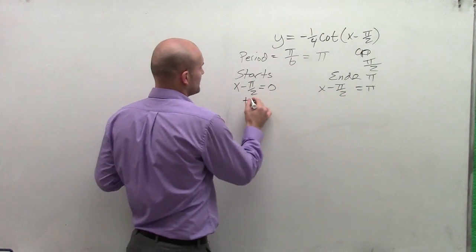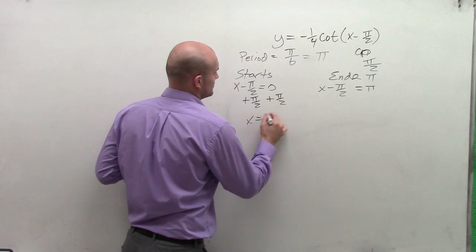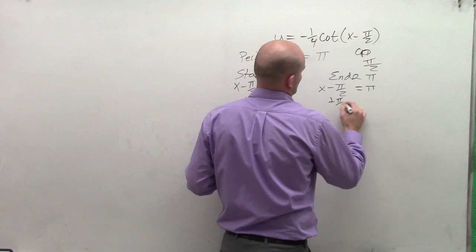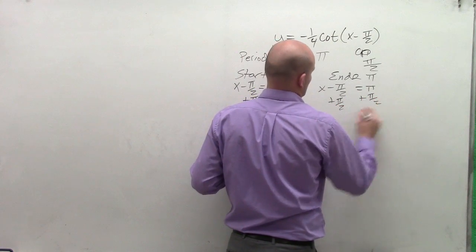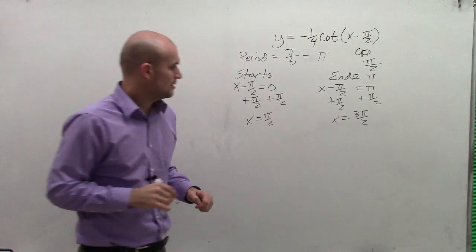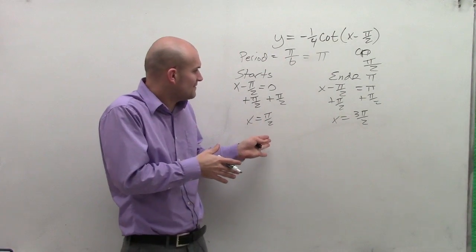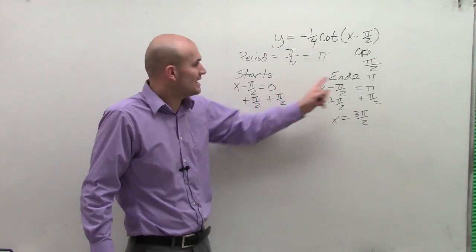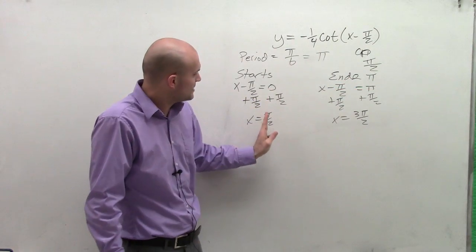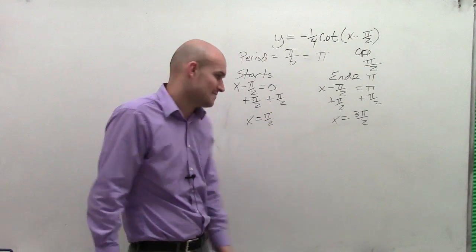Now, by solving for x, I have x equals pi halves, and x equals 3 pi over 2. Now what that means is my graph, rather than having an asymptote at 0 and an asymptote at pi, is now going to have its first initial asymptote at pi halves and its next initial asymptote at 3 pi halves.